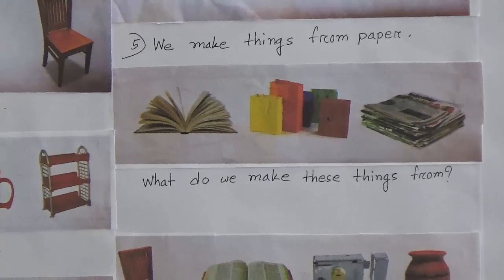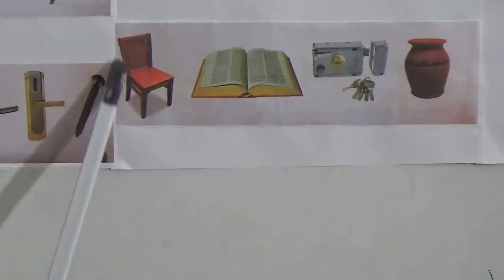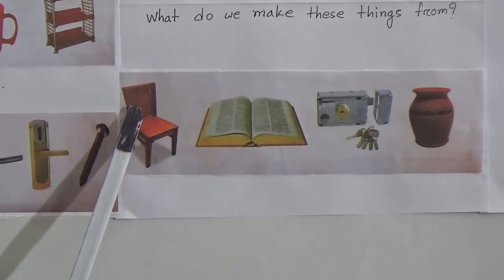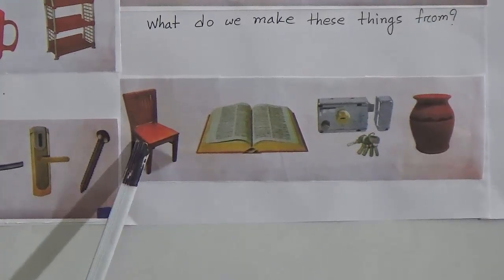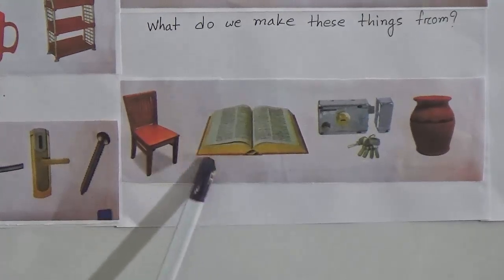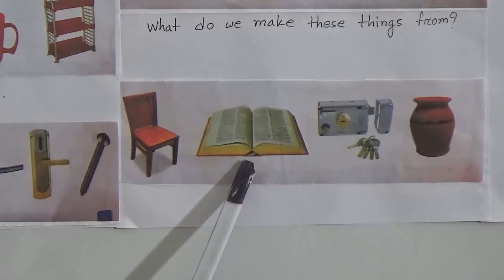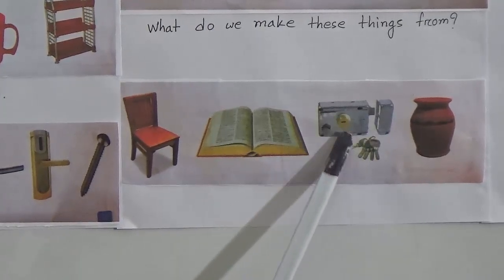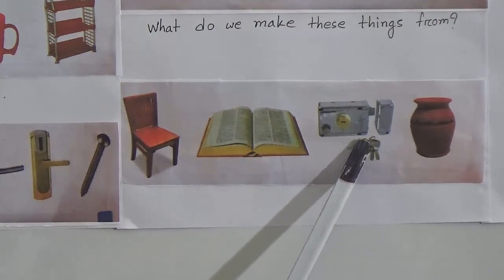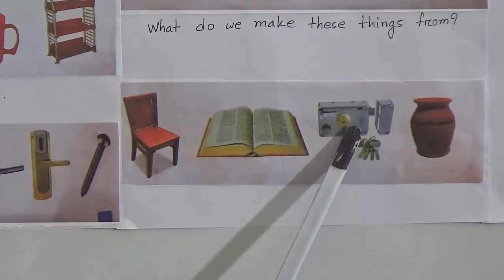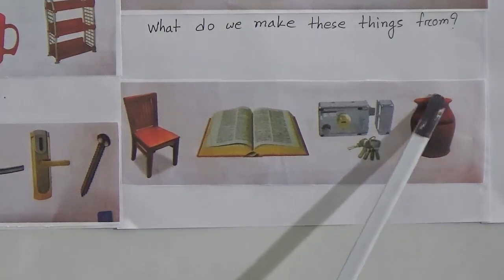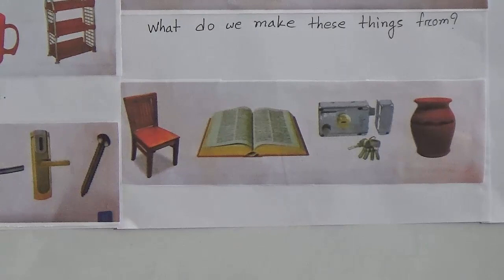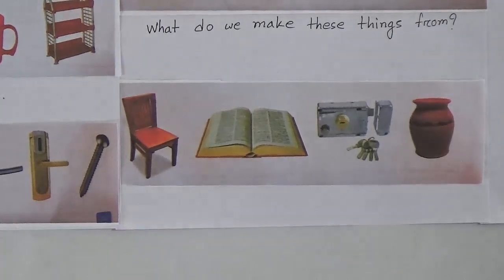Now let's revise. What do we make these things from? Do you remember? Here is a chair — this is made from wood. Here is a book — this is made from paper. Here is a door lock and keys — these are made from metal. And here is a flower vase — this is made from clay.